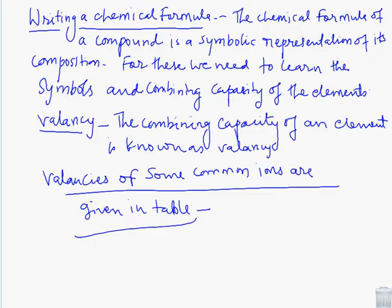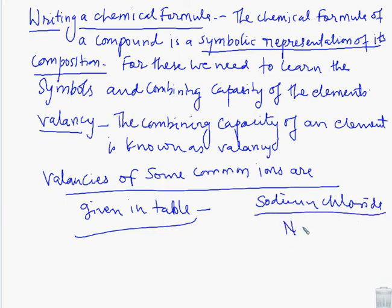Now writing a chemical formula. In chemistry, the most important thing, students, as you are going to the higher classes, you need to write the chemical formula. Chemical formula, if we say the simple meaning, is the symbolic representation of its composition. For example, suppose I have written sodium chloride. This sodium chloride is written in words, but if I write it in symbolic notation, NaCl, it is said to be its chemical formula. For writing the chemical formula, we need valency.